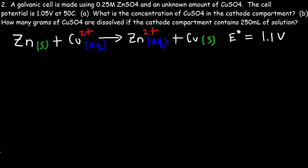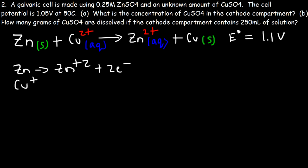Problem 2: A galvanic cell is made using 0.25 molar zinc sulfate and an unknown amount of copper 2 sulfate. The cell potential is 1.05 volts at 50 degrees Celsius. We need to find the concentration of copper 2 sulfate. Let's begin by finding N. For both oxidation and reduction half reactions, 2 electrons are needed, so N = 2.